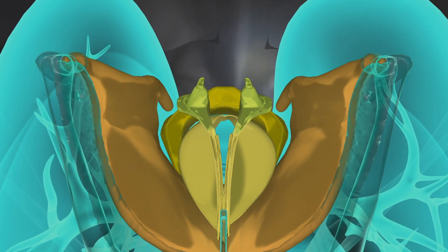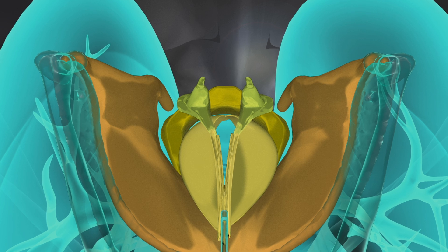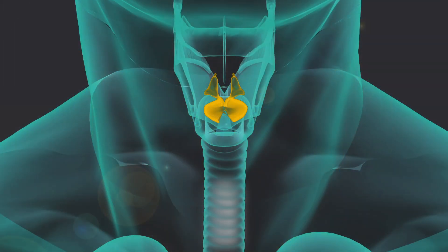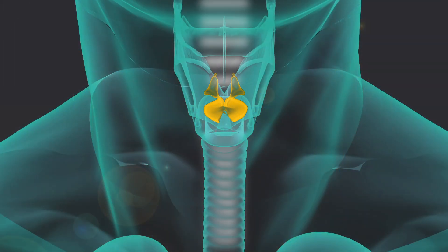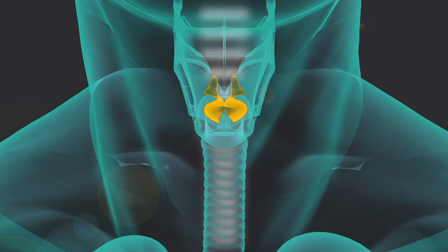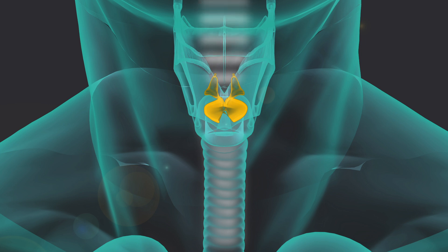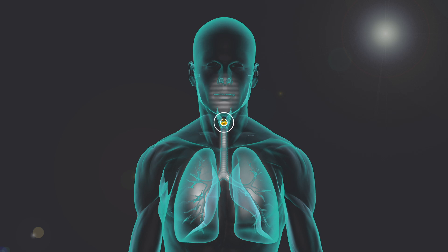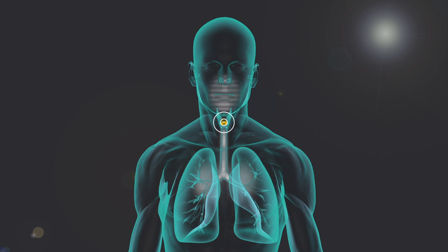We have our vocal folds producing all the harmonics. When we sing, we control the pitch using our vocal folds, but by changing the vocal tract we are affecting the colors.